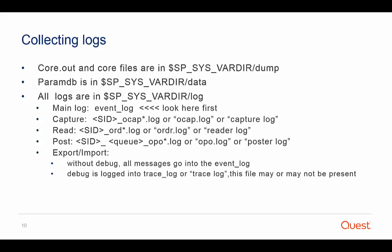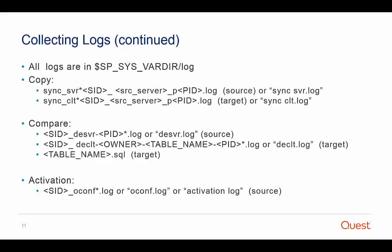When you turn debug on, the information will go into a file named TraceLog. The TraceLog for export will be on the source and the TraceLog for import will be on the target. SharePlex utilities also create their own logs. For copy utilities on source, look for the sync server log; on target, look for sync client logs. The compare logs on source are named DESVR log and on target they are named DECLT log. The activation log is located on the source system where the config file was activated and is named OCONF.log.